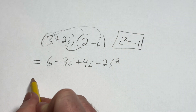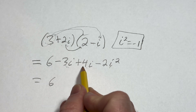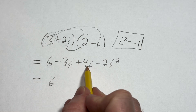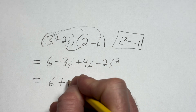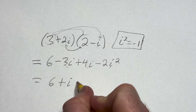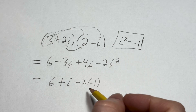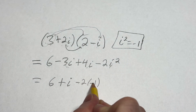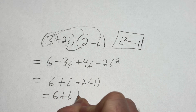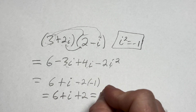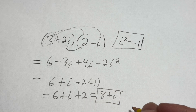So now this is 6. We can combine these terms: negative 3i plus 4i gives us 1i, which is simply i. And then negative 2 times negative 1 — because i squared is negative 1 — negative and negative is positive, so this is now positive 2. So we get 6 plus i plus 2, which is equal to 8 plus i. And that would be the final answer.